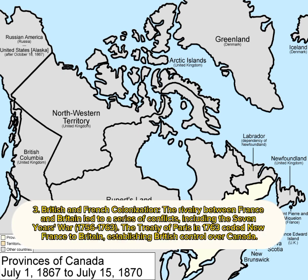British and French Colonization: The rivalry between France and Britain led to a series of conflicts, including the Seven Years' War from 1756 to 1763. The Treaty of Paris in 1763 ceded New France to Britain, establishing British control over Canada.